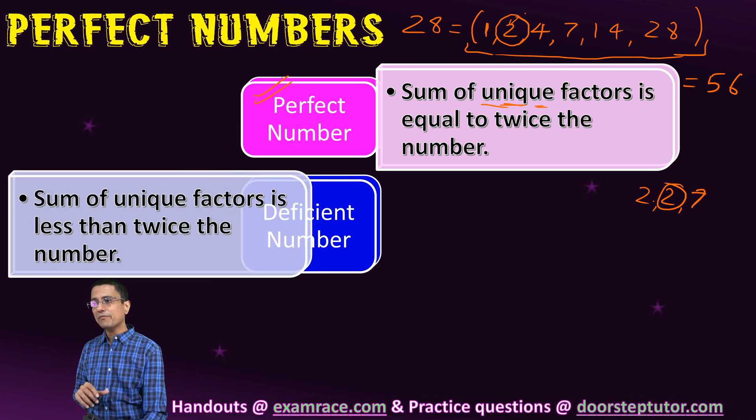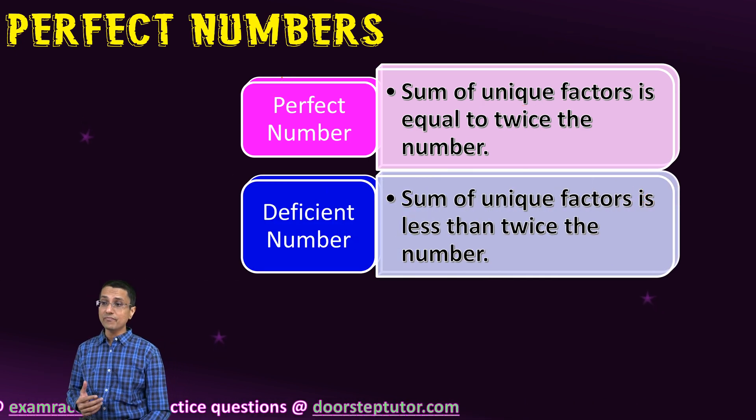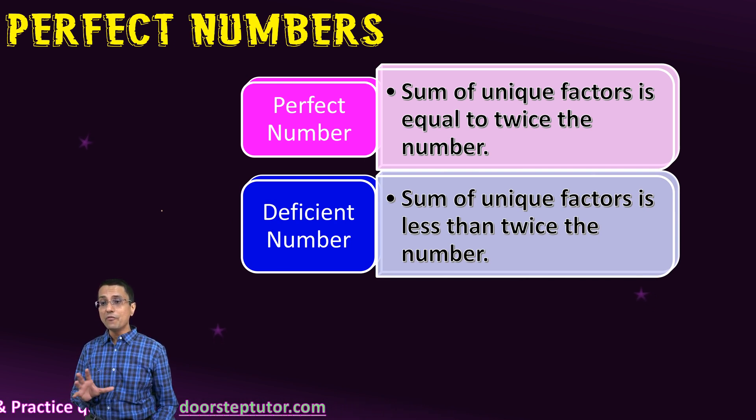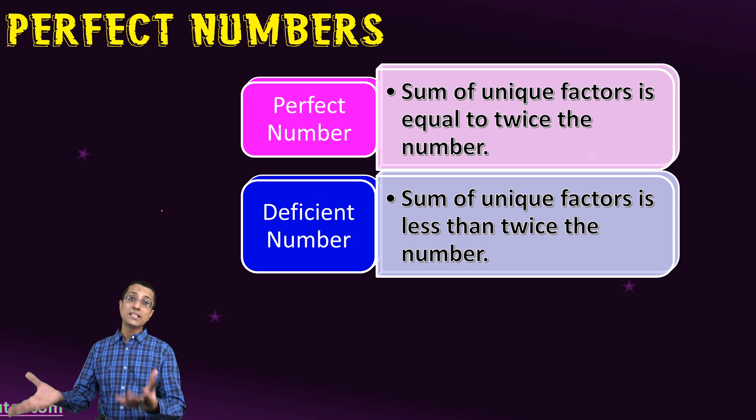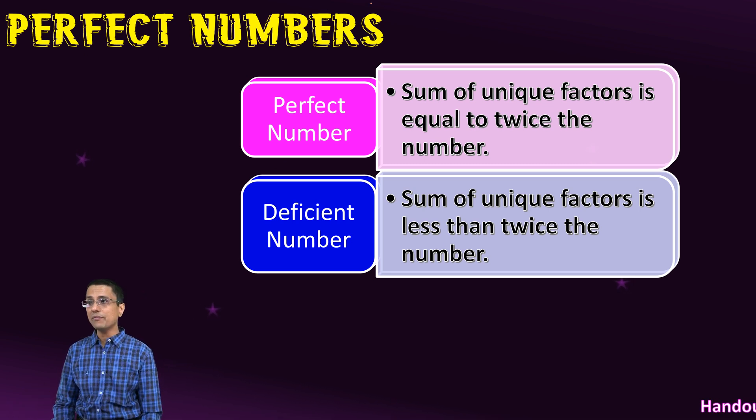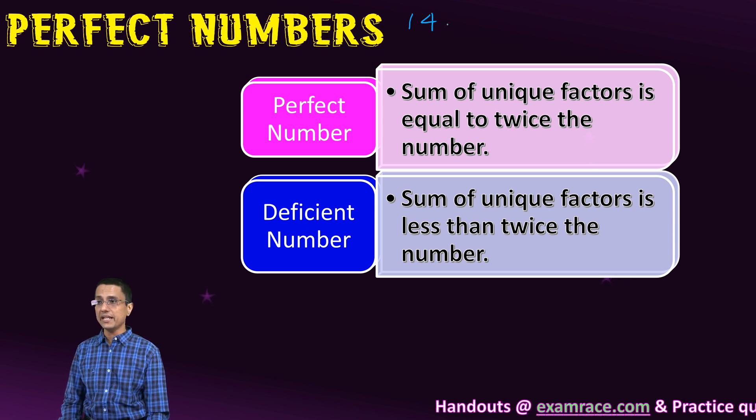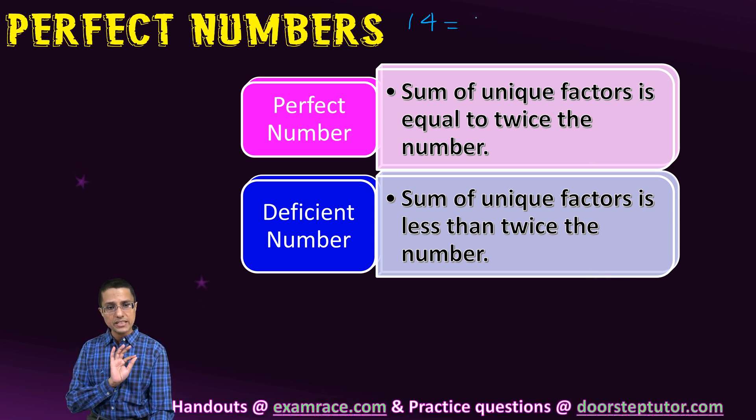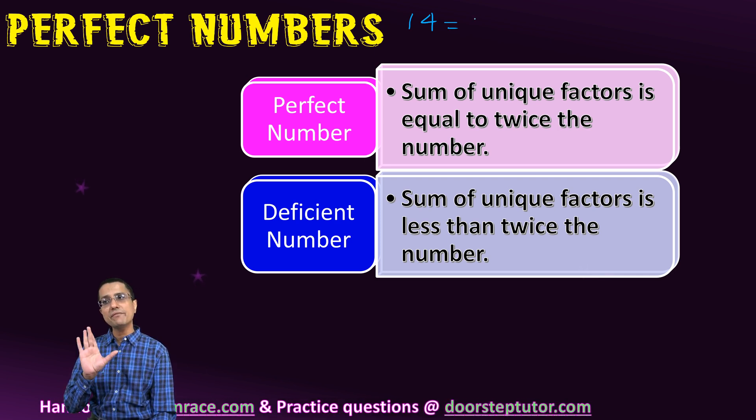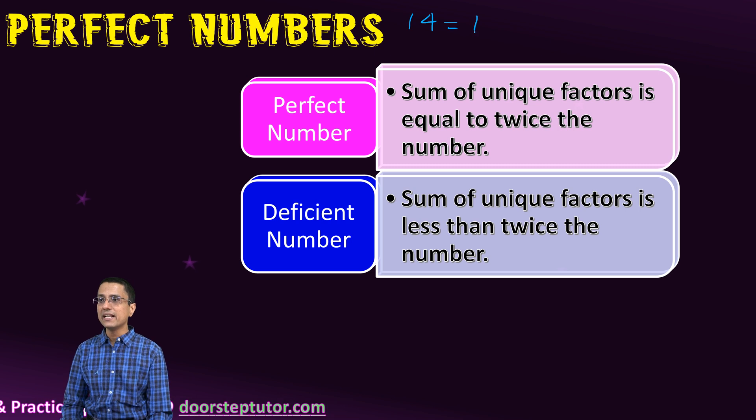Similar to perfect numbers, we have deficient numbers. A deficient number is one where the sum of unique factors is less than twice the number. Let's take an example of 14. Again, I list all the unique factors, meaning if a factor appears twice, we only take it once.